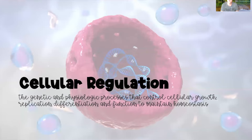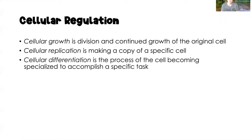Today's video is going to be on cellular regulation. The definition of cellular regulation is the genetic and physiologic processes that control cellular growth, replication, differentiation, and function to maintain homeostasis. There are three definitions we need to understand: cellular growth, which is division and continued growth of the original cell; cellular replication, where a copy is made of a specific cell; and cellular differentiation, the process of a cell becoming more specialized in order to accomplish a very specific task.